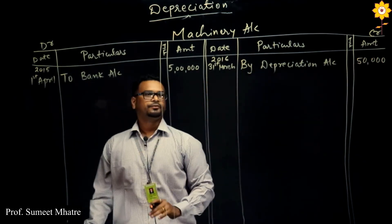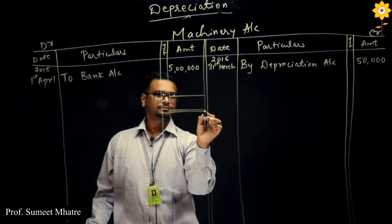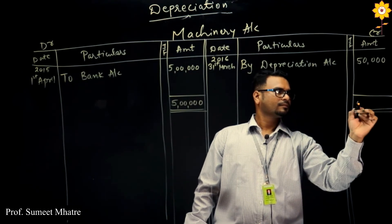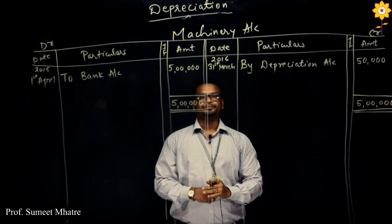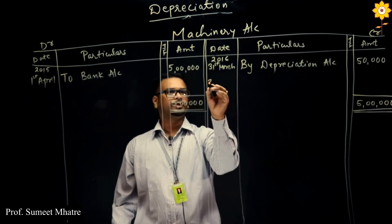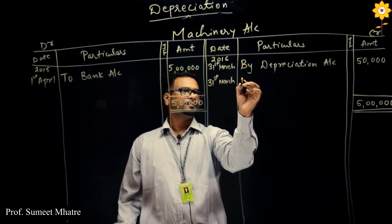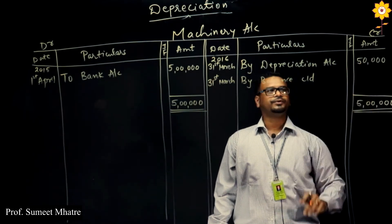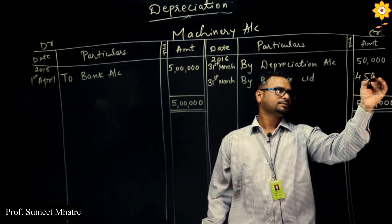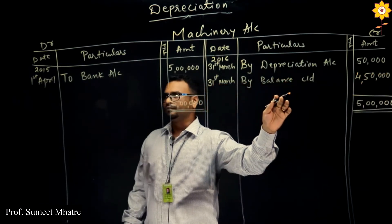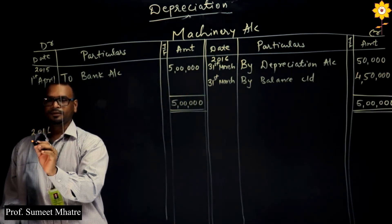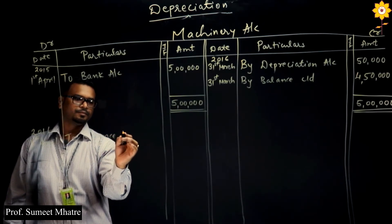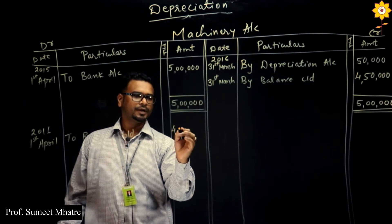Now we are going to close the first year. While closing, we have to take out a balance. The balance date will again be 31st March — 'By Balance Carried Down'. From 5 lakhs, we reduce 50,000, so the amount will be 4 lakhs 50,000. The same amount we carry down to the next year, that is 1st April 2016 — 'To Balance Brought Down' — amount 4 lakhs 50,000.